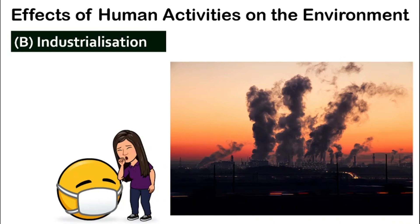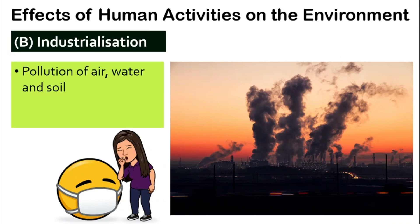Next, industrialization — when more and more factories are being built. What are some of the effects? Number one is pollution. They cause very serious pollution of the air, water, and soil. They also cause acid rain, and again the greenhouse effect, because they contribute to greenhouse gases.